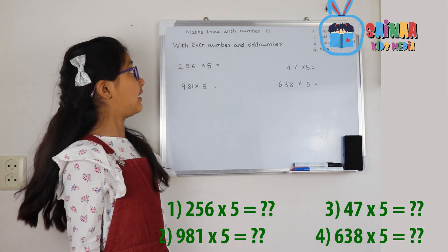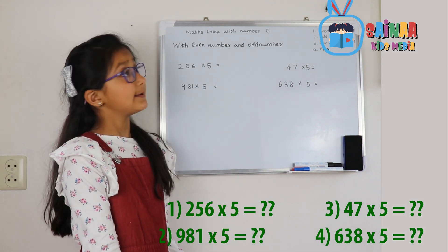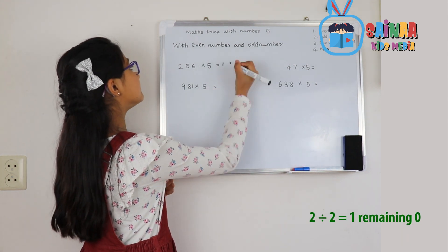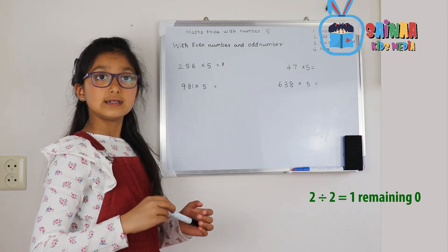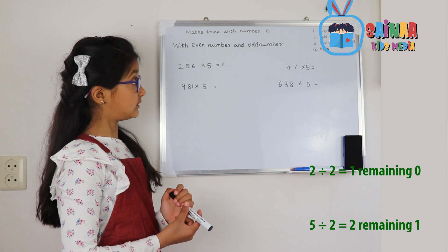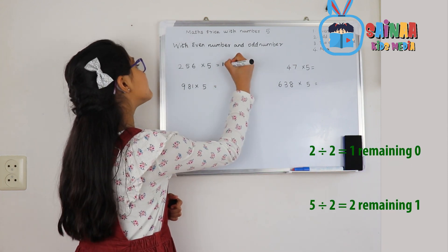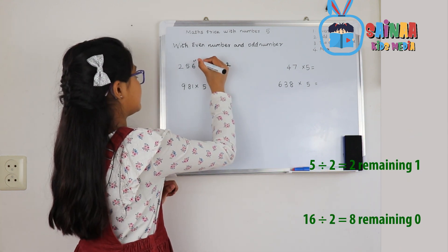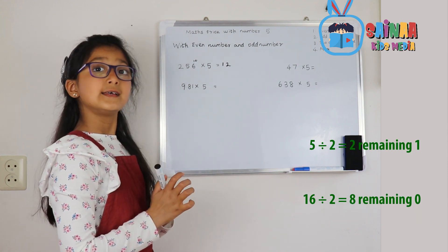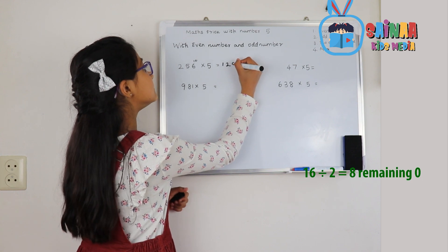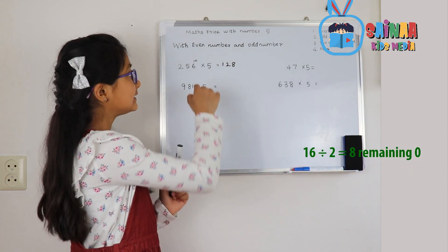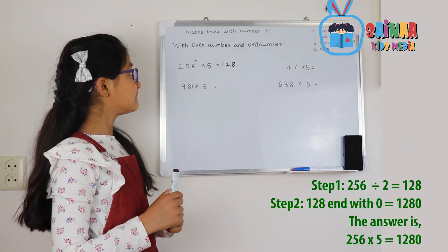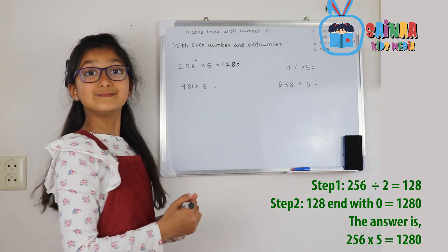Now let's do it with an even number and an odd number mixed. We just do the same thing. 2 divided by 2 is 1. 5 divided by 2 is 2, remaining 1. We put the extra 1 as a 10 to the 6. 10 plus 6 is 16. 16 divided by 2 is 8. Since the last number is 6 — an even number — we just put a 0. Done.